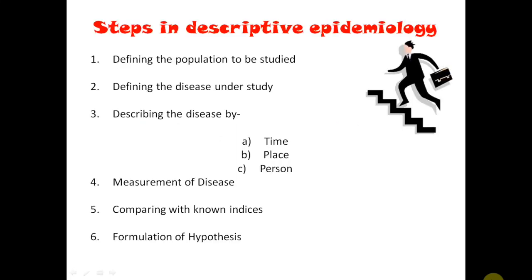What are the basic steps in descriptive epidemiology? These are the fundamental steps. First: defining the population. Suppose we have a problem in front of us and we are going to conduct a study in a population — we need to define the population. Second: defining the disease under study. Third: describing the disease by using time, person, and place. Fourth: measuring the disease. Fifth: comparing with non-indices. And finally, the ultimate aim of descriptive study is to formulate a hypothesis.